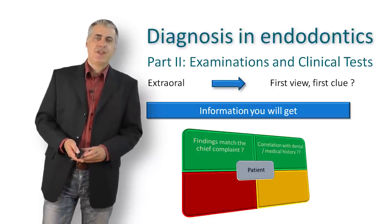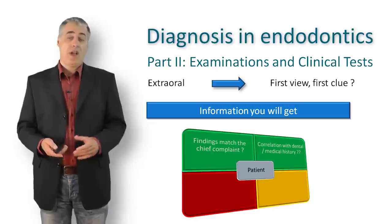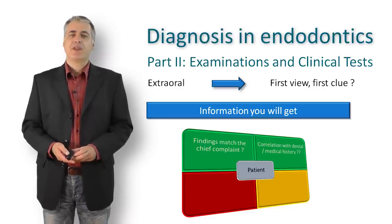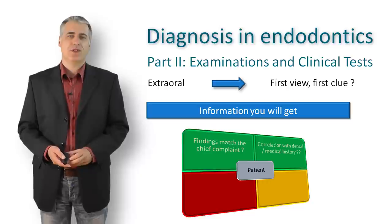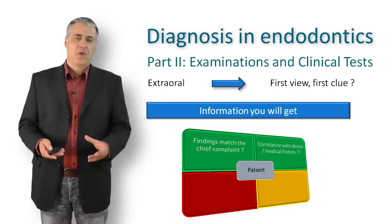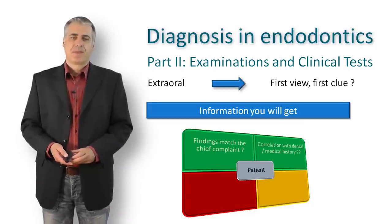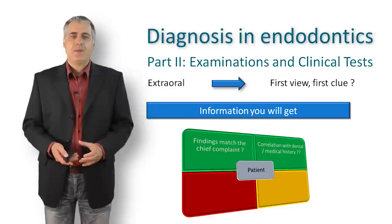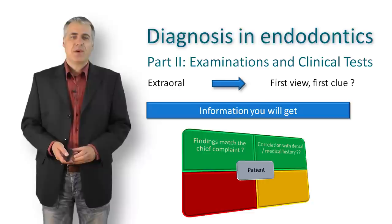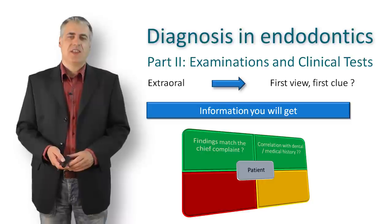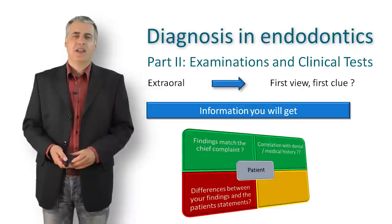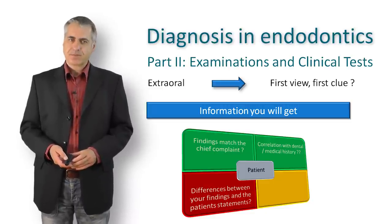Here is an easy example. The chief complaint is a swollen upper lip. During examination you detect swelling and reddening of the upper lip; the nasolabial fold is almost gone. The dental history tells you there was a trauma years ago to one of the central incisors, but the medical history also tells you the patient often suffers from recurrent lip herpes — both could be a reason for the chief complaint. Further examination is necessary.